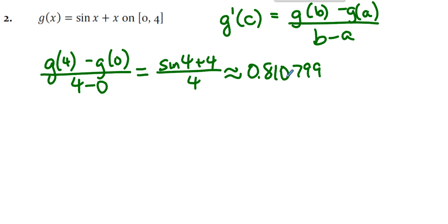So what do we do? We set the derivative equal to that. Because this is the that part, we need the g prime of c. What's g prime of c? Well, the derivative is cosine x plus 1. So we solve this.